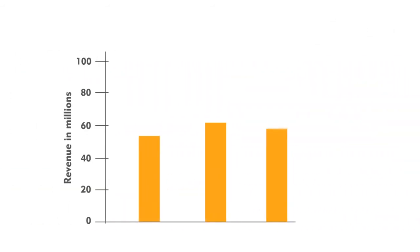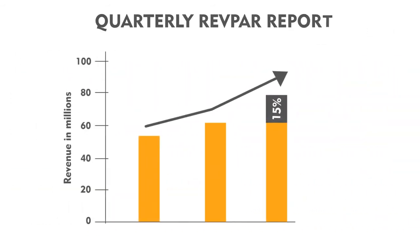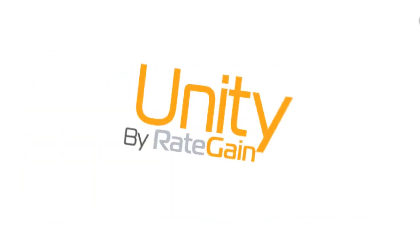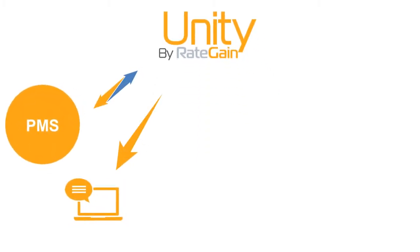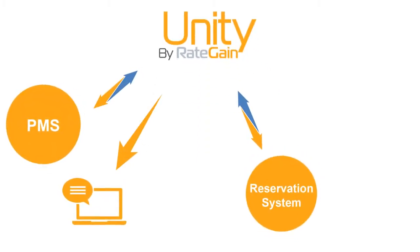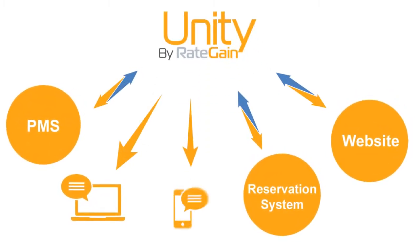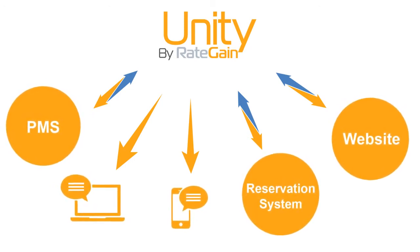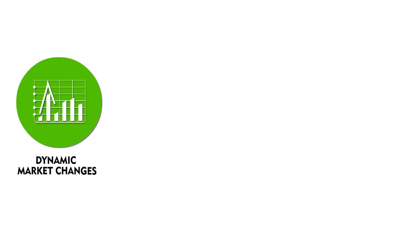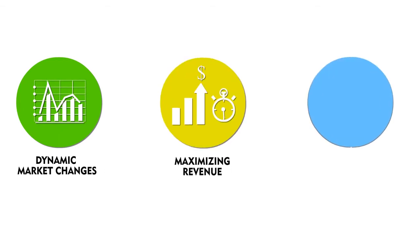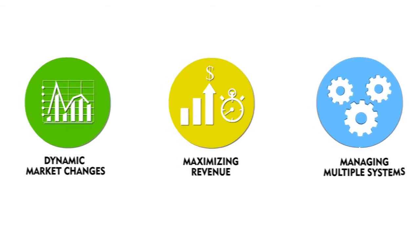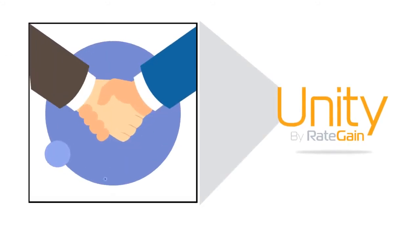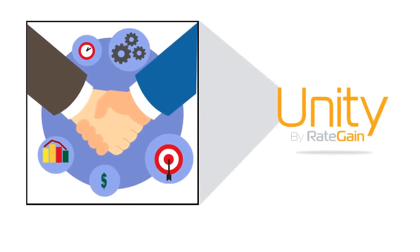It increases RevPAR by up to 15%. Unity integrates with your PMS and CRS systems and delivers real-time alerts via a mobile app, becoming an integral part of your ecosystem. From being responsive to dynamic market changes to maximizing revenue and cutting the hassle of managing multiple systems, Unity is your ultimate reliable partner.